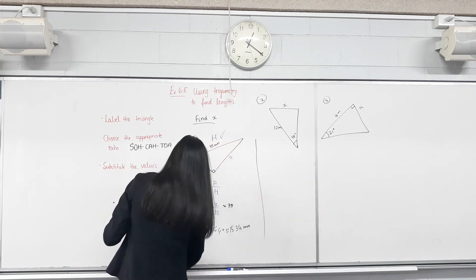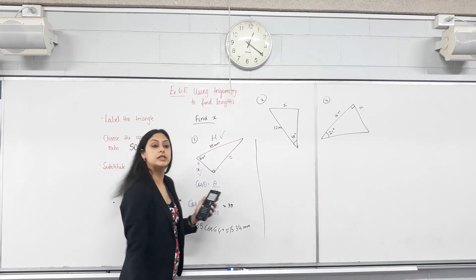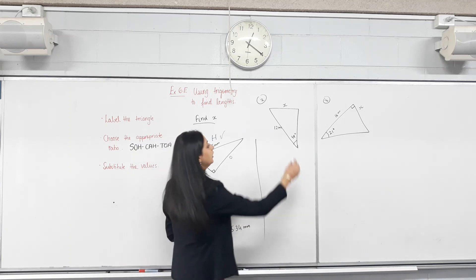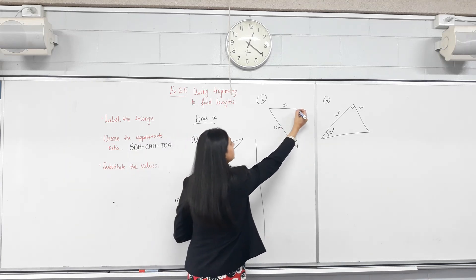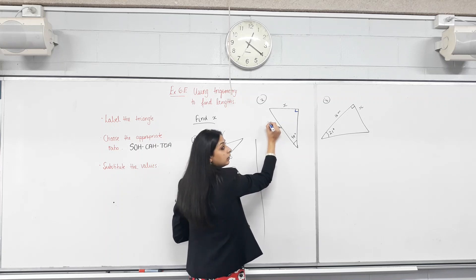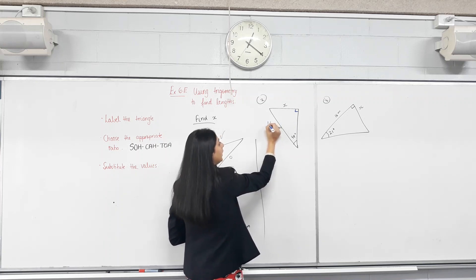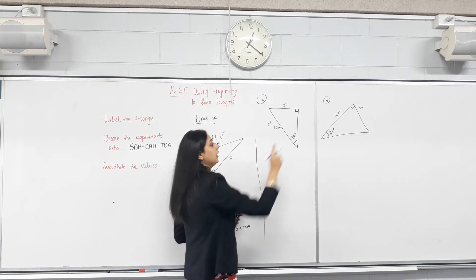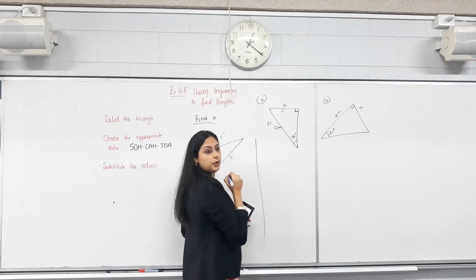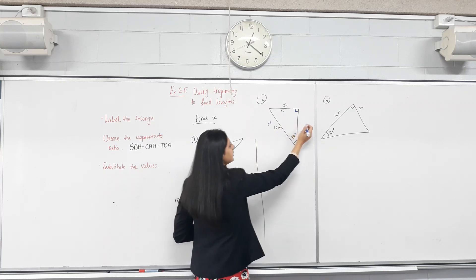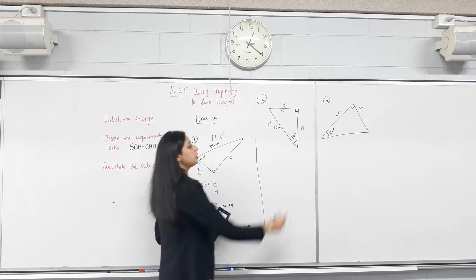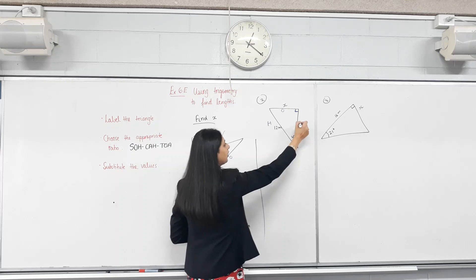Next one. Again — what's the first step? Label the triangle. This is the 90-degree angle, so this must be the hypotenuse H. This side is opposite the given angle, so this is O. And this is the adjacent, A.